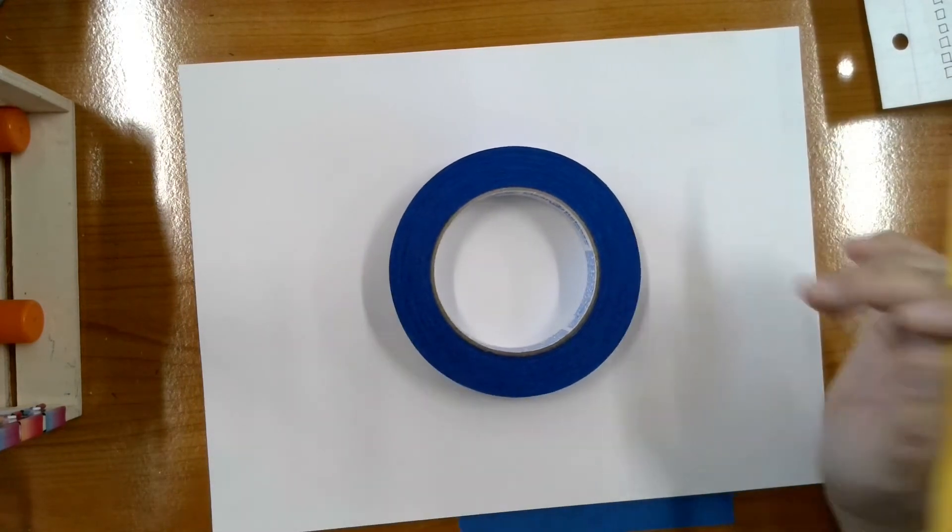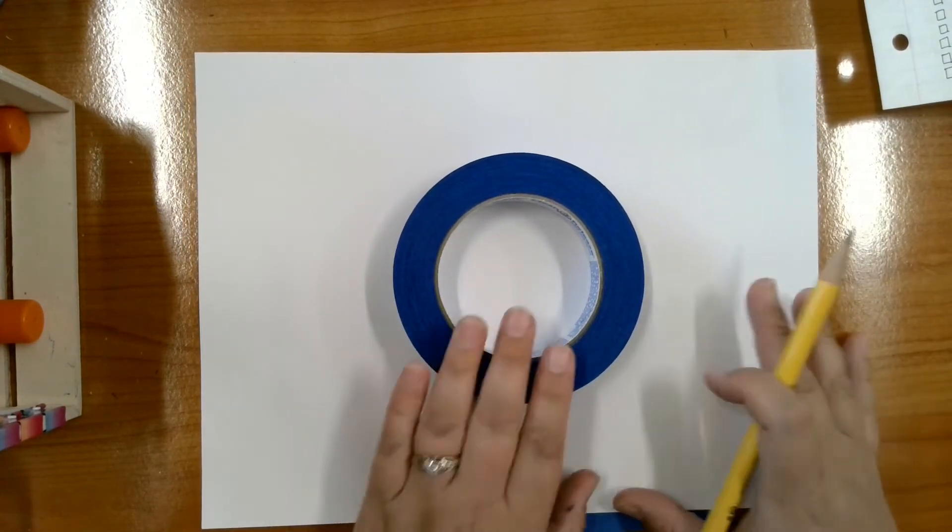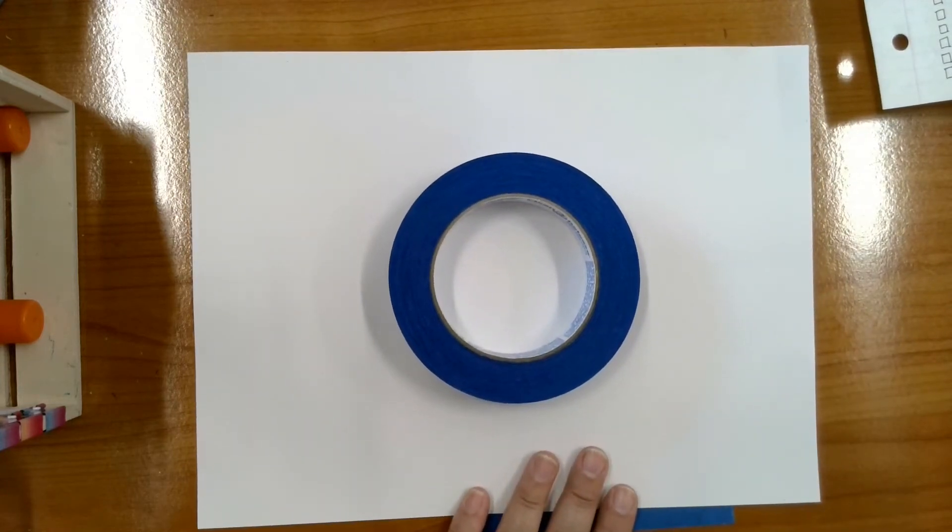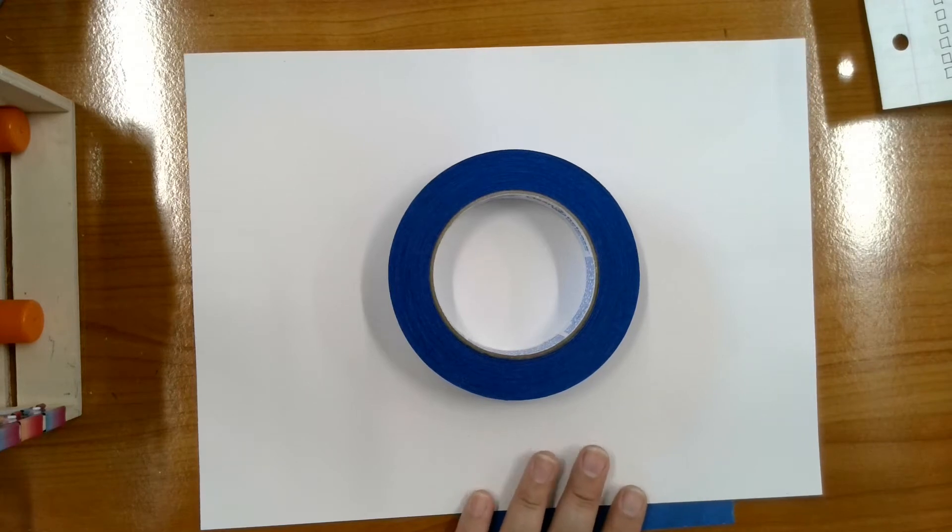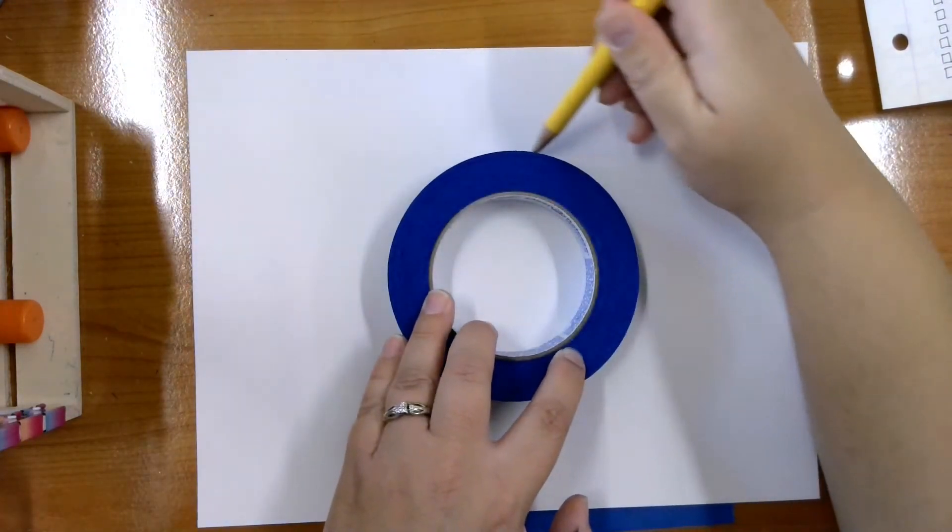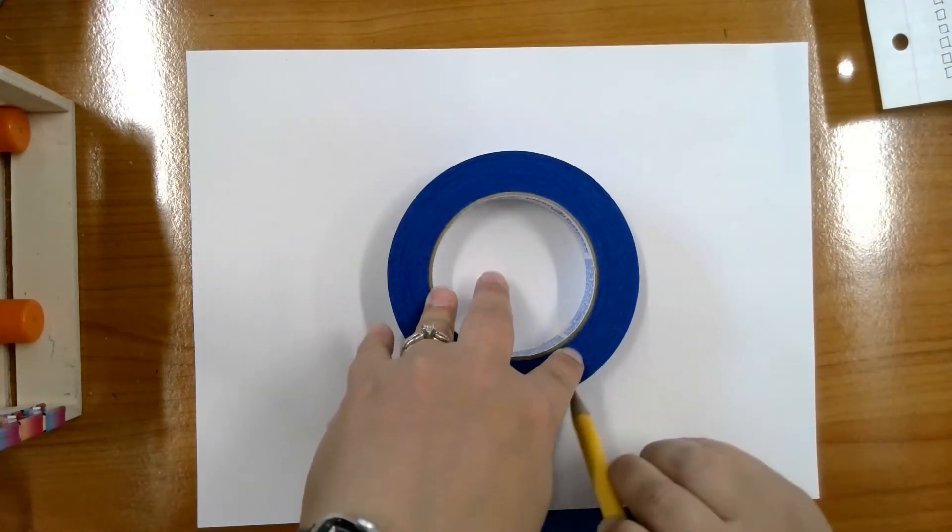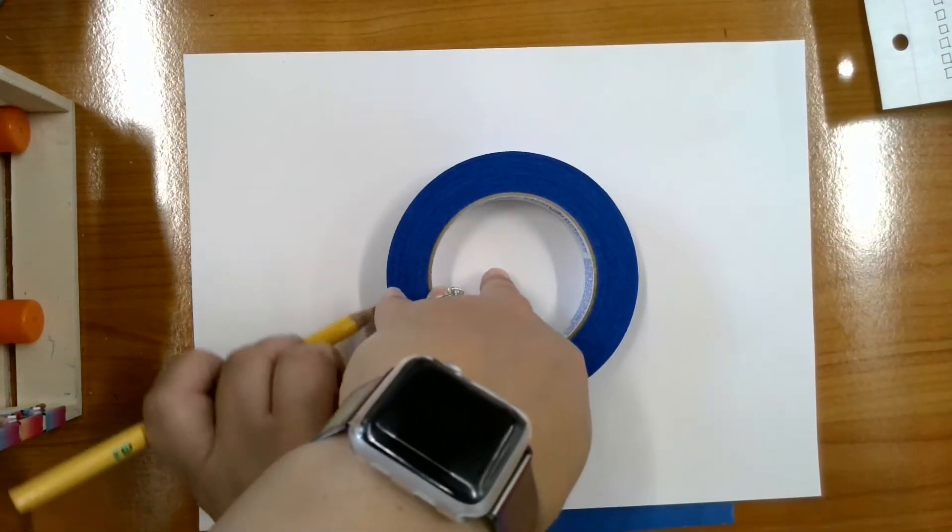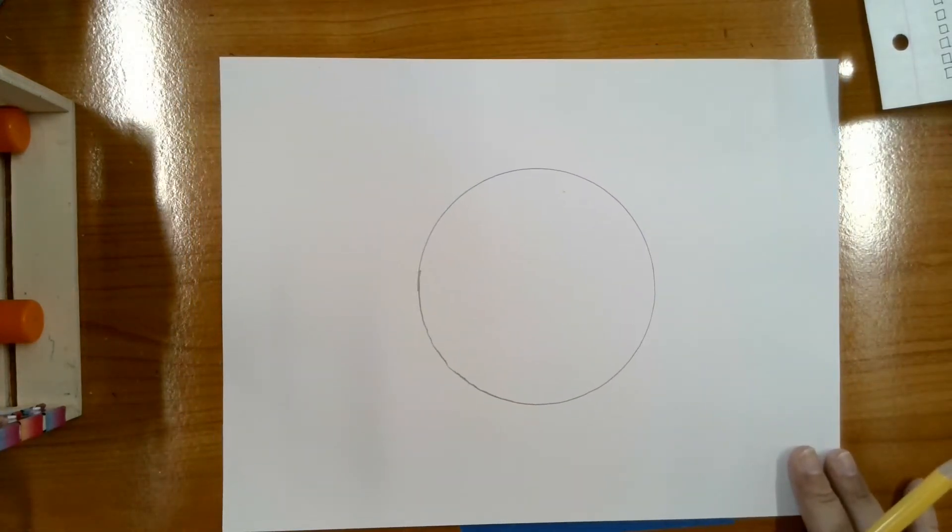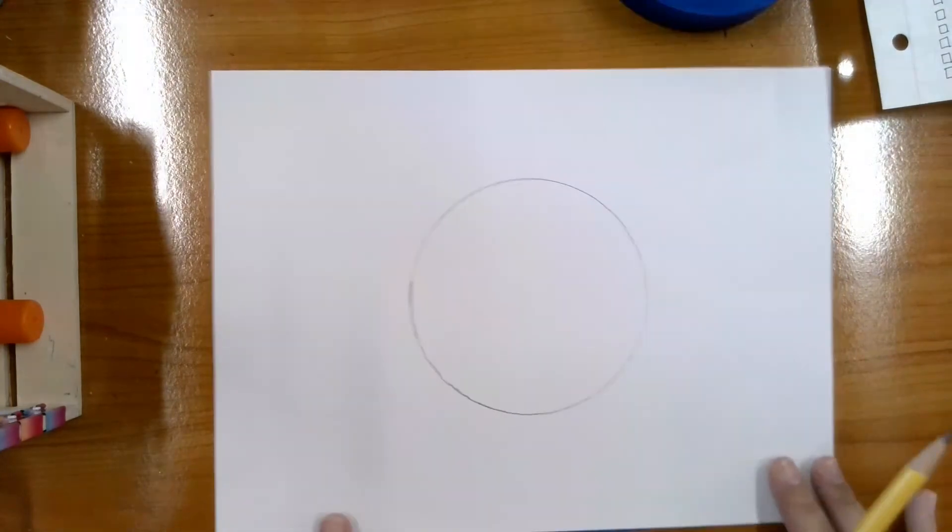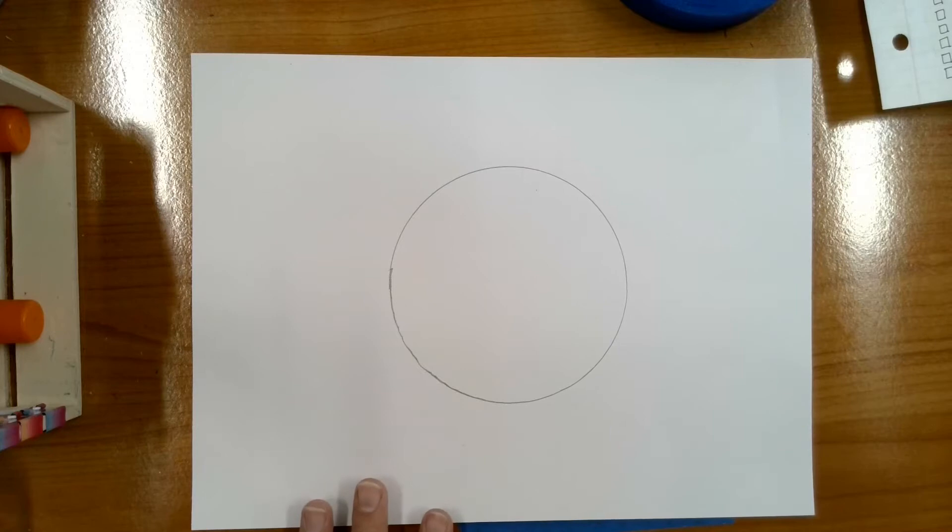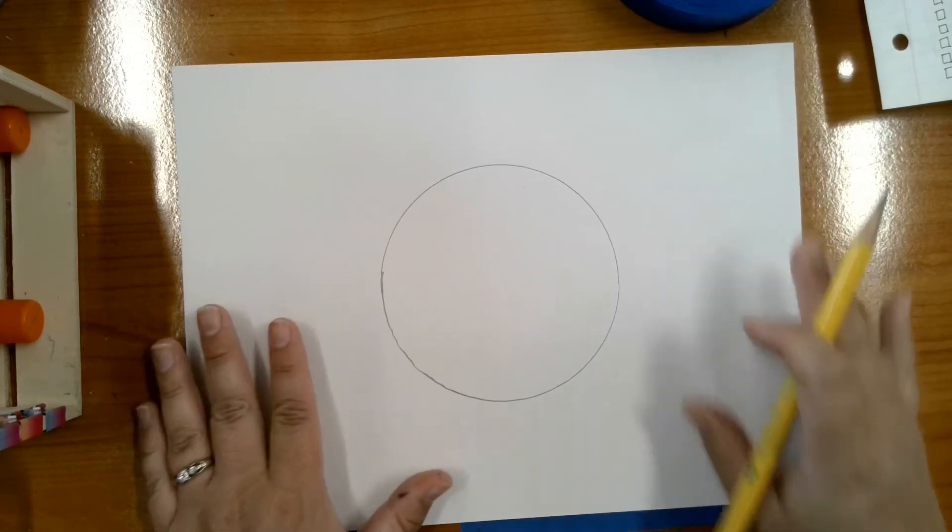So I'm going to put my item that I'm going to trace in the middle of my paper. Remember you can always pause the video if you need to get something and then start it again when you're ready. And I'm going to trace around carefully holding it, going around. I want you to do this all by yourself, just doing your best. Notice how I drew with pencil because I don't want to make any mistakes that I can't erase, right.